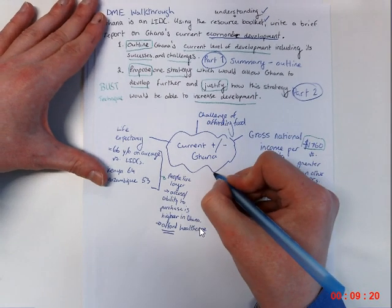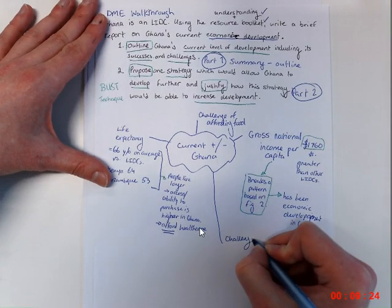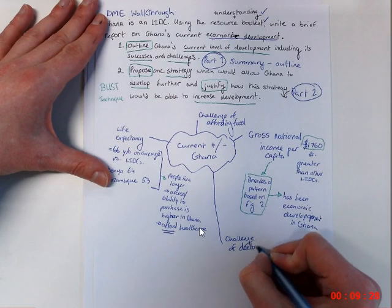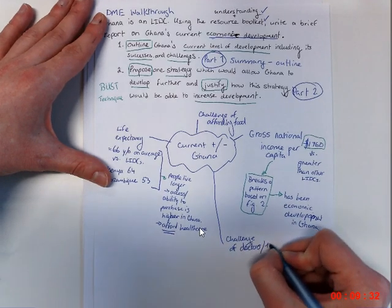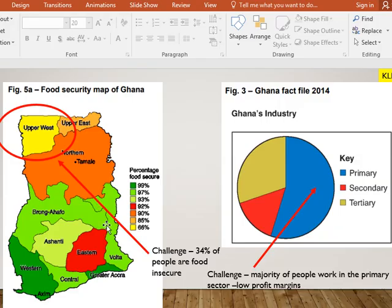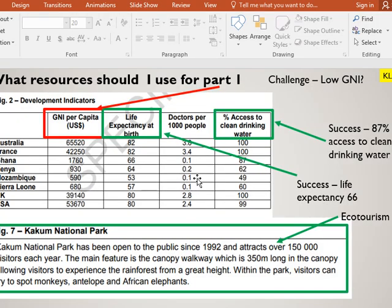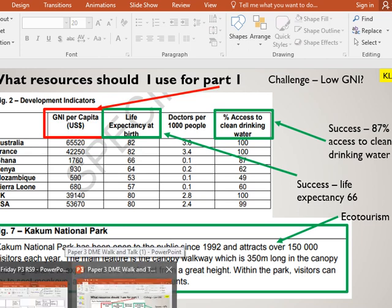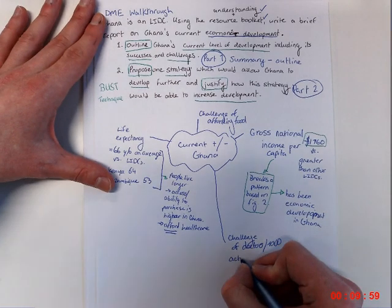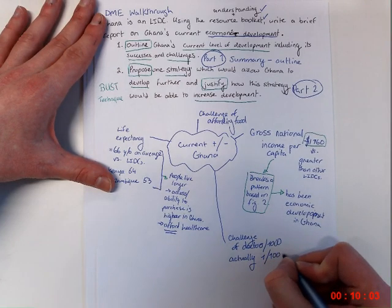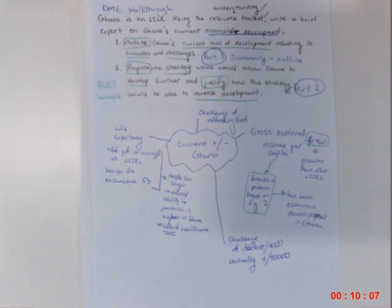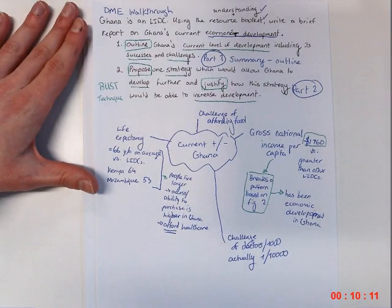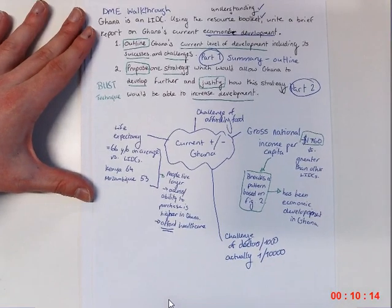So come down here. We can talk about the challenge of food security, the challenge of affording food. And you can refer to that map that we saw, the challenge of doctors per thousand. I just want to double-check that piece of information, that we're not giving you incorrect information, and it is 0.1 doctors per thousand people. That is really low. That means that there's not even one doctor for every thousand. There's one doctor for every 10,000 people in that country. Really difficult. That's huge compared to the advanced countries. And don't forget that you can compare these to advanced countries as well.